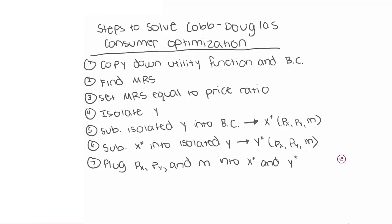This is the second part of the two-part video series on consumer optimization. In the first part, we talked about the general process to solve for Cobb-Douglas consumer optimization — the seven steps listed out here. In the second part, we're going to focus on putting these steps into action. Anytime you get a Cobb-Douglas utility function, you can follow these seven steps exactly as written.